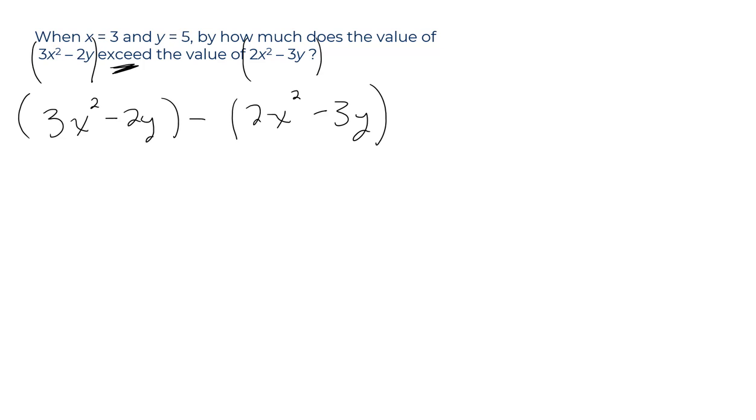Two important things to point out here. The first, 3x squared and 2x squared, these two terms are similar. They are like terms, as they say in math. Of course, the same is true of 2y and 3y. Those are like terms. That's the first point.